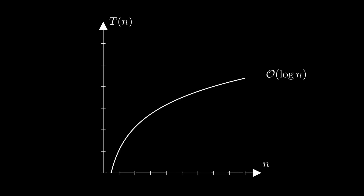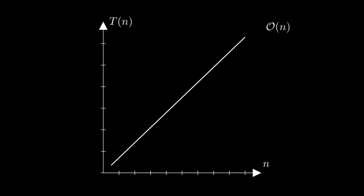Much worse than logarithmic time complexity, but in most cases still very good, is linear time complexity. Intuitively, this simply means that if my input is twice as long, my algorithm will take twice as much time. Algorithms that essentially iterate once over a list of numbers often have linear running time. We have already seen an example of such an algorithm in the last video, when we tried to find the largest value in an array.